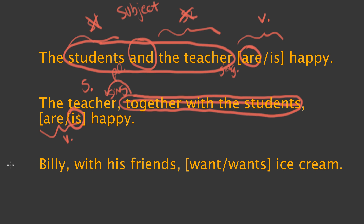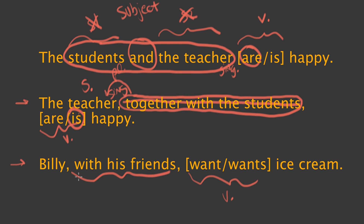Let's look at a third case, which is exactly the same situation as the second sentence. We're not sure which verb to use — singular or plural — so we have to go back and find the subject. There are two candidates: Billy and friends. One of them is the true subject and one is actually a modifier. The modifier is 'with his friends,' and you can tell that's the modifier because it's telling us information about Billy — Billy is with his friends. Since that's a modifier, we ignore it, and the true relationship becomes 'Billy wants ice cream': singular Billy, singular wants.